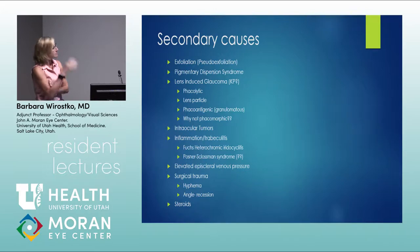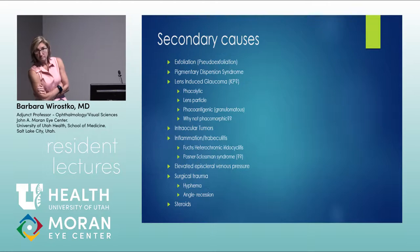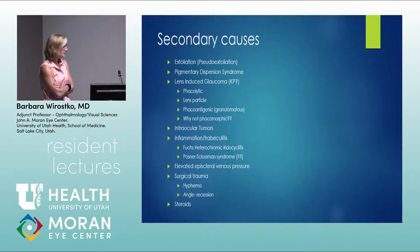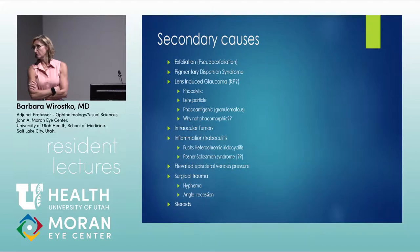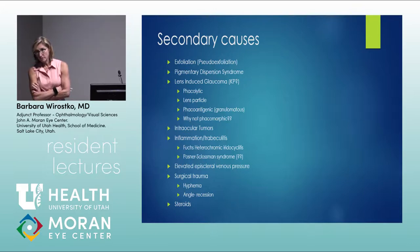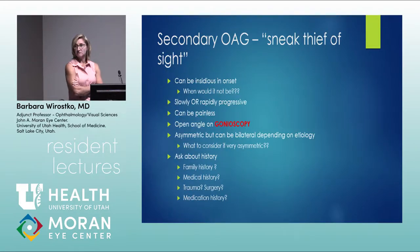Other secondary causes include inflammation — trabeculitis, Fuchs, Posner-Schlossman; elevated episcleral venous pressure — look for dilated tortuous episcleral vessels; and trauma — hyphema, angle recession, steroids. Always ask about steroid use, prior ocular inflammation, surgery, and trauma. Gonioscopy is essential — you must confirm the angles are open to diagnose primary open angle glaucoma.